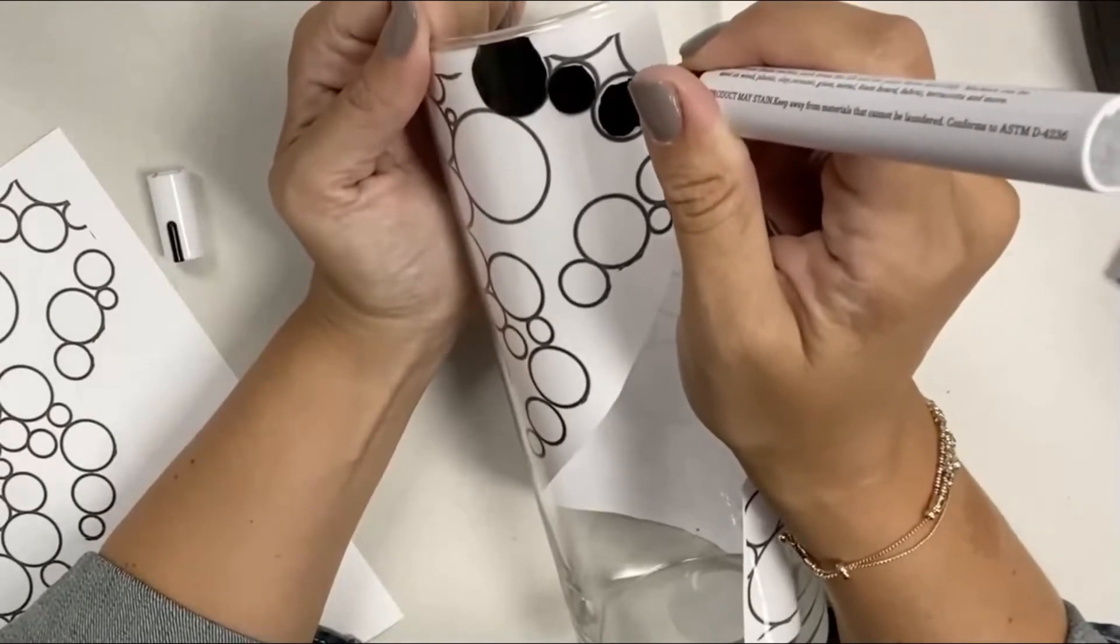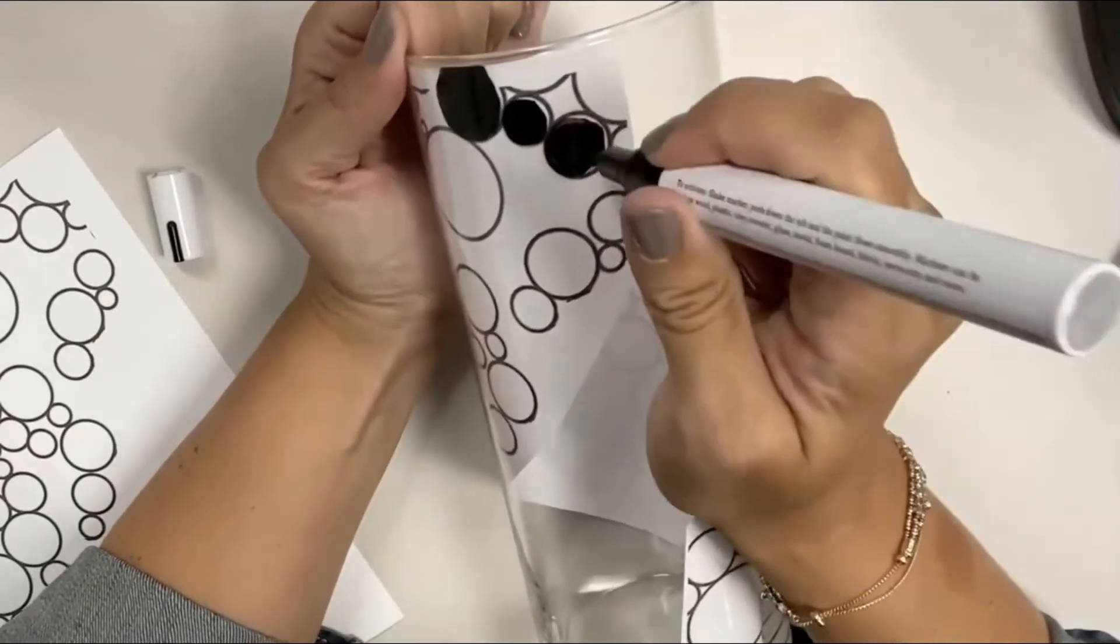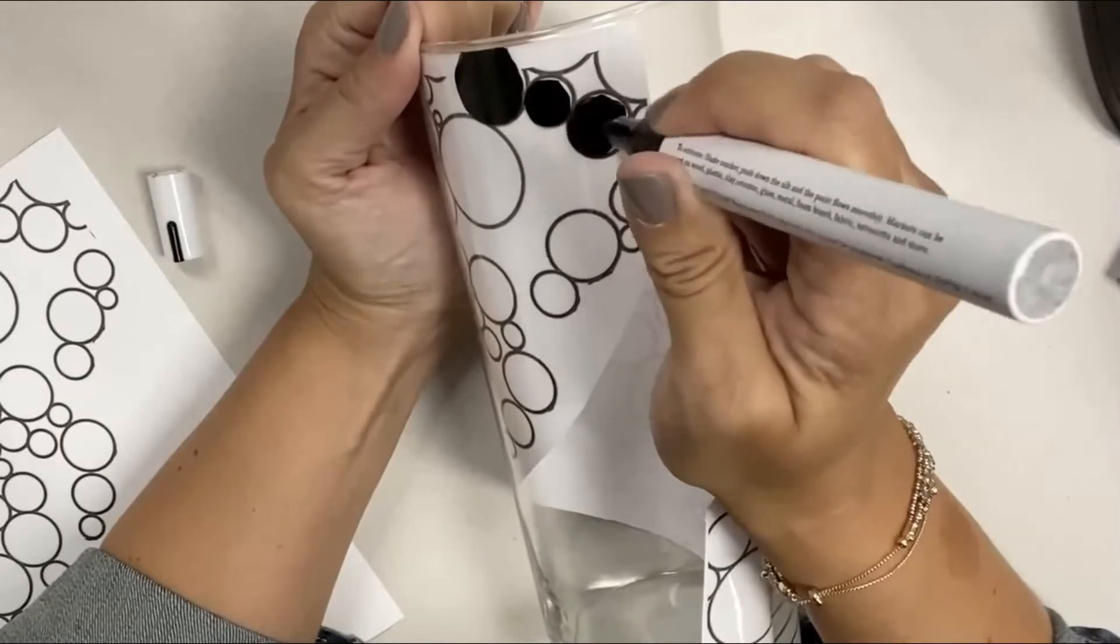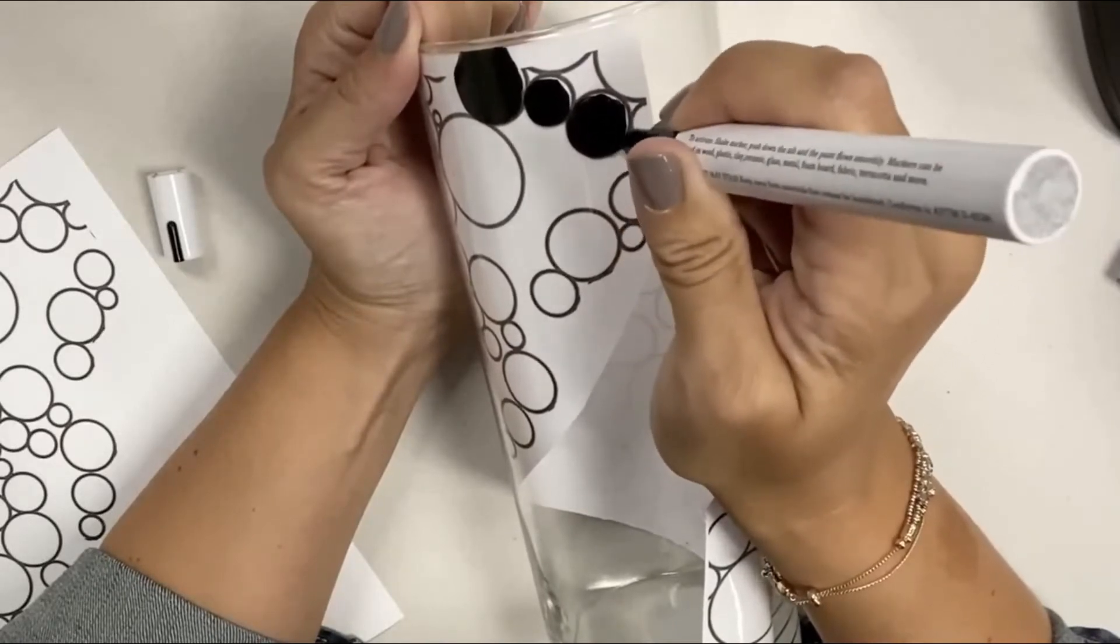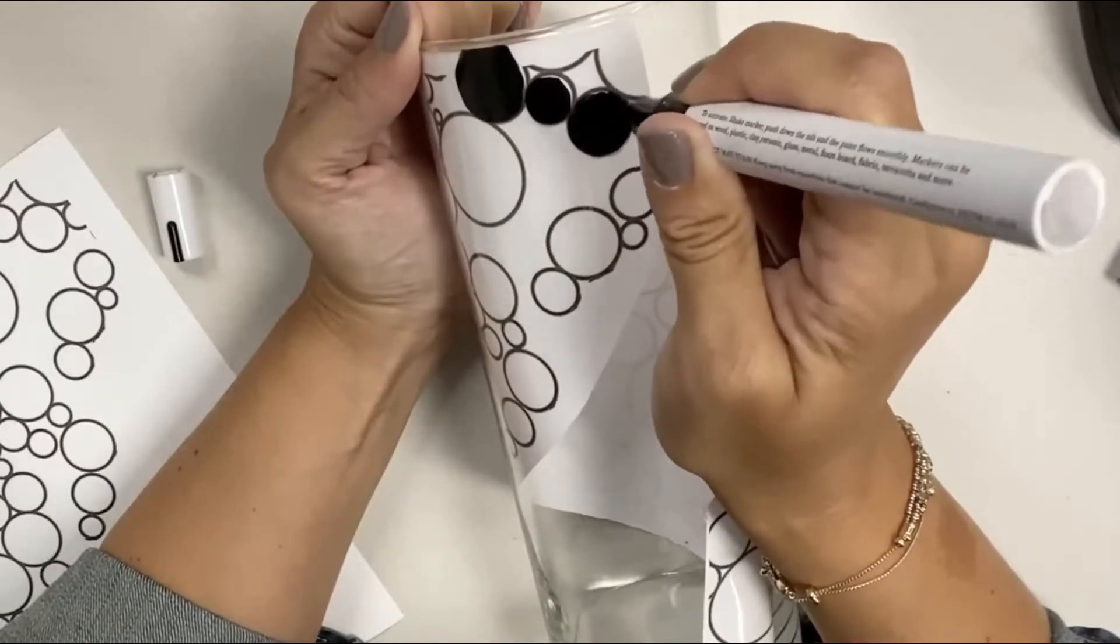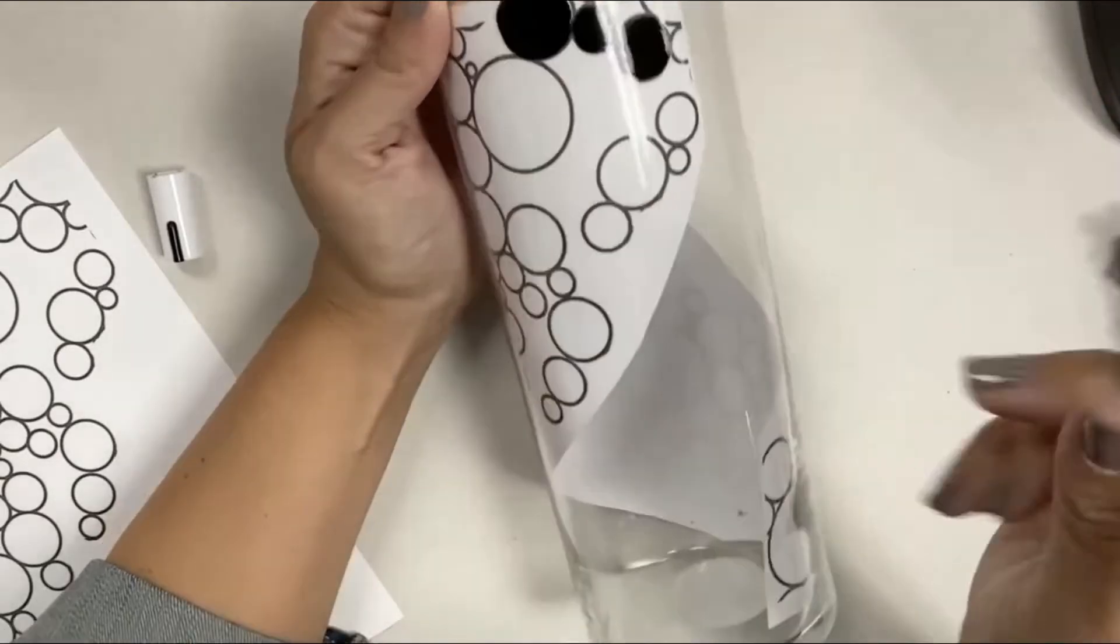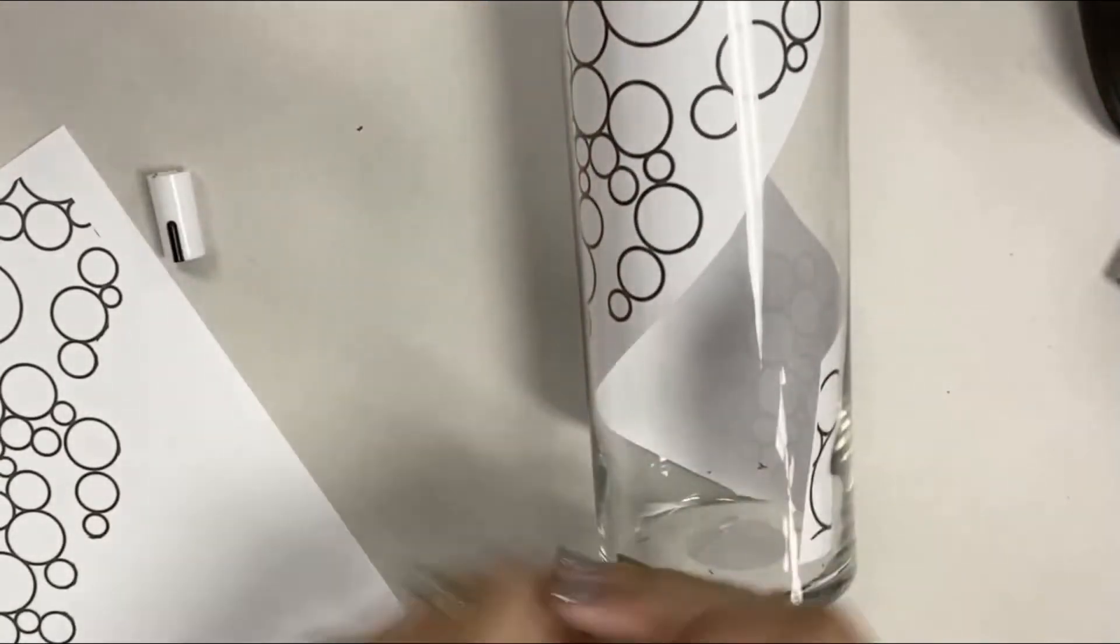So I'm going to let that dry for a second, and then what you'll do is you'll go back with your puff paint and outline all of the bubbles or whatever your design is.